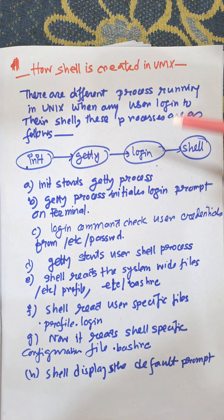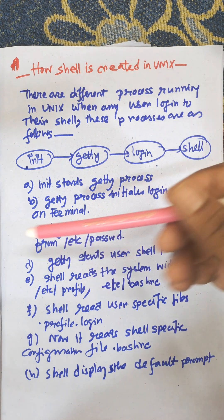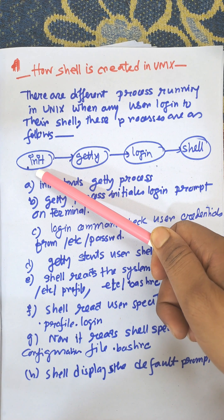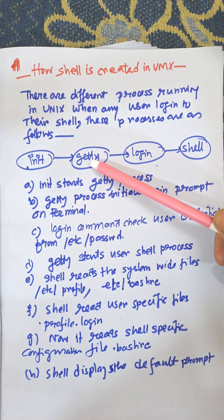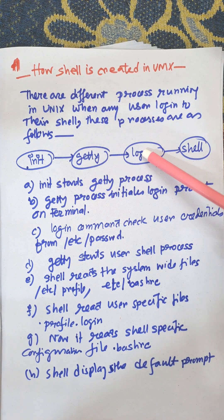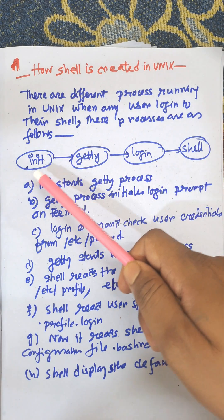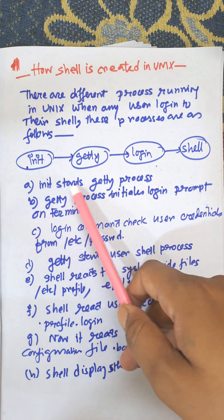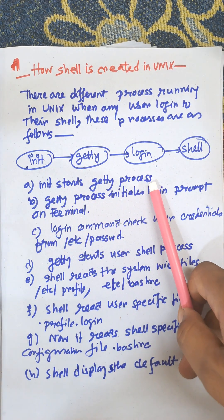The processes are as follows: init is the first process, it will call getty, and then getty calls login, and then the shell will appear. So this is the step of creating a shell: init starts getty, getty calls login, login starts the shell.